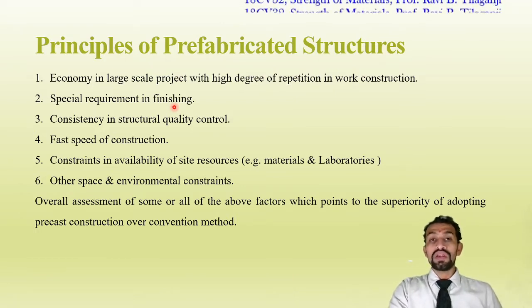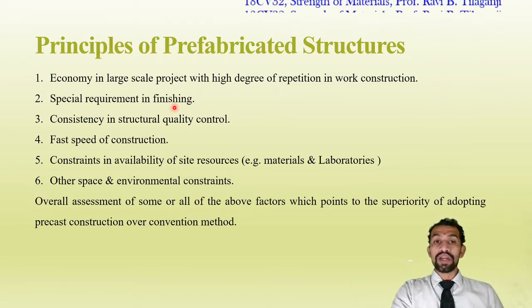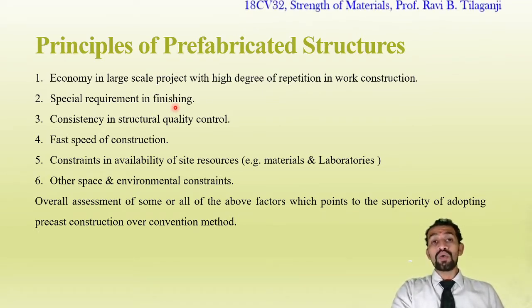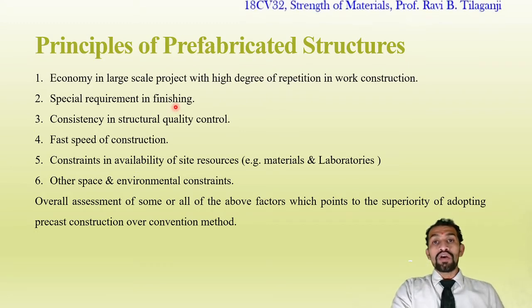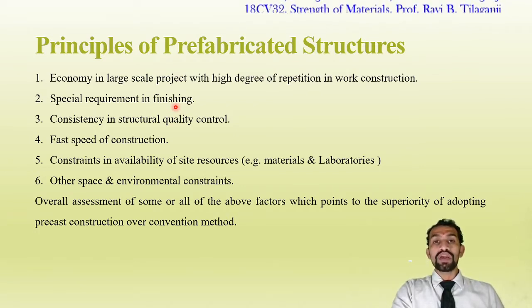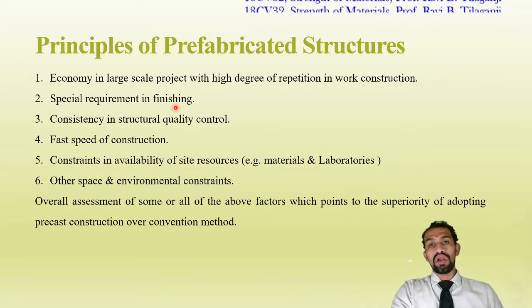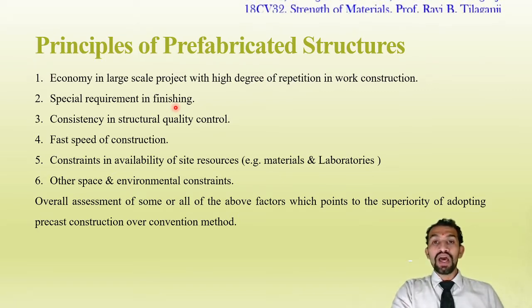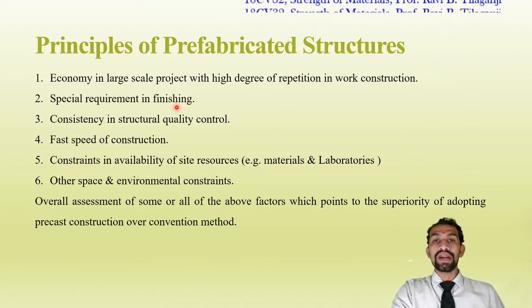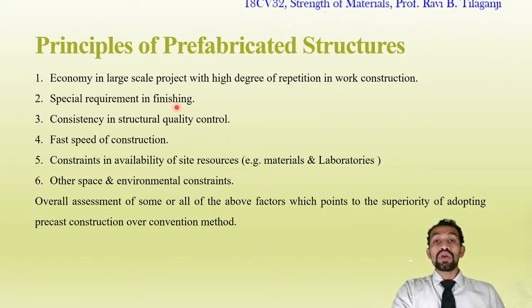If a member is not able to join properly, an unjointing process can take place. Therefore, special inspection and skilled labor knowledge are required for the joint and finishing parts, because columns, beams, slabs, and walls are separate. If the joint point is hidden with filler material, a special requirement is needed to give it a monolithic look.